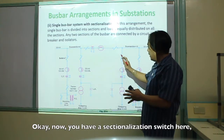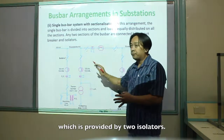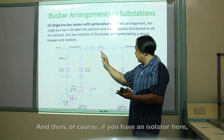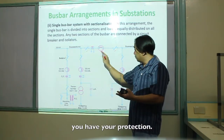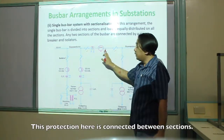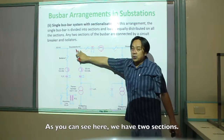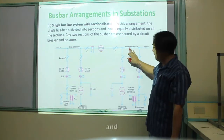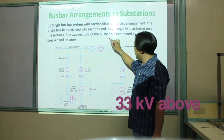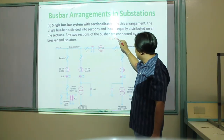The next type is the single bus bar with sectionalization switch. You have a sectionalization switch provided by two isolators. The protection is connected between sections — you may have two sections: section one and section two. This type of power system is for 33 kV and above.